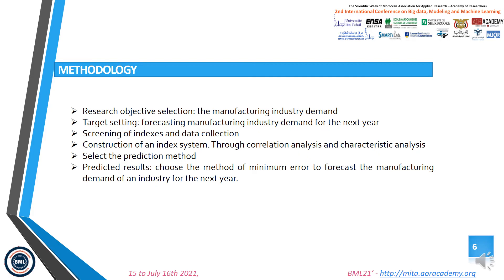The research framework includes the following steps: first, research objective selection for manufacturing industry demand; second, target setting — forecasting manufacturing industry demand for the next year; third, screening of indexes and data collection; fourth, construction of an index system through correlation analysis, characteristic analysis, and selection of the prediction method; and finally, the predicted results — choosing the method of minimal error to forecast manufacturing demand for the next year.